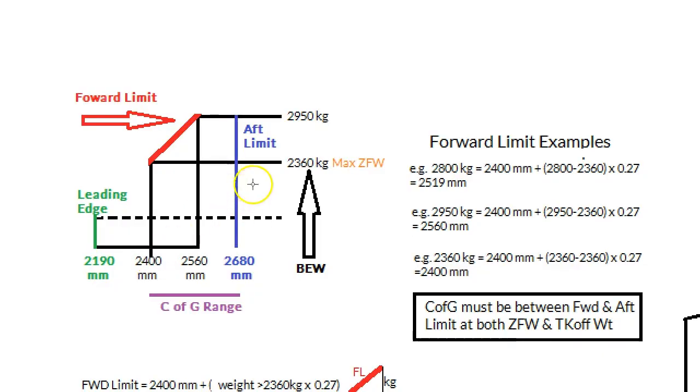So at 2360, they told us the forward limit was 2400 millimeters. And at 2950, they told us that the forward limit was 2560. So what we do is we then draw a line along there, and that would allow us to plot or calculate out, using this maths over here, the forward limit for any weight in between those two, so that we could get the forward limit at any particular weight.